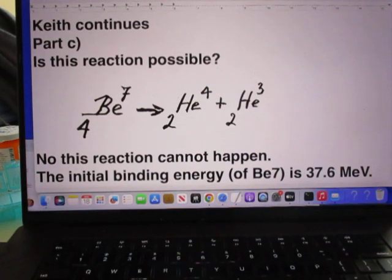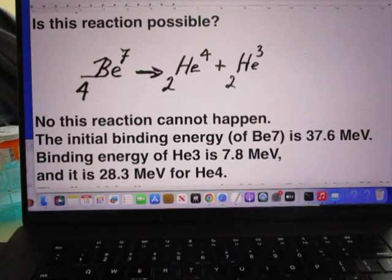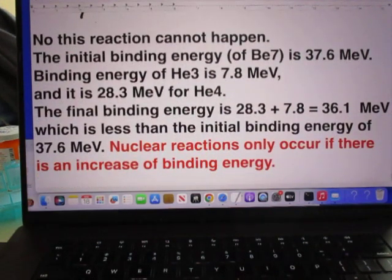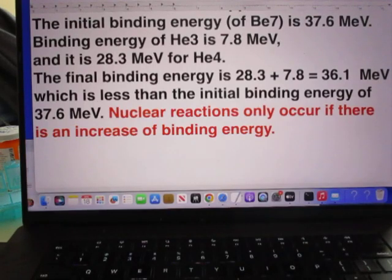Now Keith continues, the third part. Is this reaction possible? And the answer is no, this reaction cannot happen. The initial binding energy of beryllium-7 is 37.6 MeV, but the binding energy of helium-3 is 7.8, and it is 28.3 for helium-4. So the final binding energy is 36.1 MeV, which is less than the initial binding energy of 37.6. So this cannot happen. Nuclear reactions only occur if there is an increase in binding energy, not a decrease.